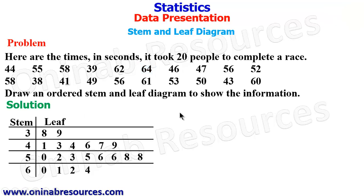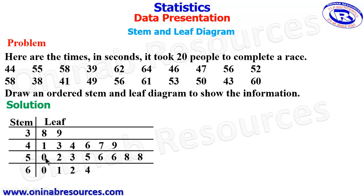We are now done drawing an ordered stem and leaf diagram to show the information. Remember, there are 20 values. You can verify by counting only the numbers in the leaf column: 1, 2, 3, 4, 5, 6, 7, 8, 9, 10, 11, 12, 13, 14, 15, 16, 17, 18, 19, 20. We confirm that we have accommodated all the numbers.